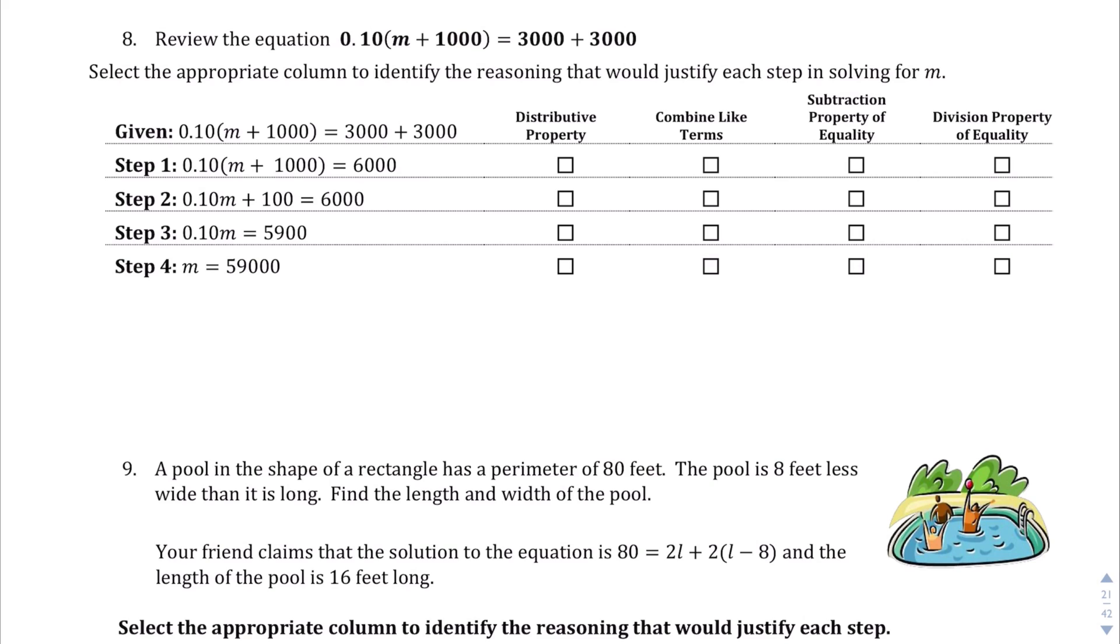Question number 8. Let's review this equation. This random equation: 0.10 times M plus 1,000 equals 3,000 plus 3,000. Select the appropriate column to identify the reason that would justify each step in solving for M. So we have that first one. First thing I do is distribute, but they don't do that. They actually—it looks like they combined in this step one. They combined these two terms, 3,000 and 3,000. So that is combining like terms. The next thing they did looks like they distributed that 0.10 to both the M and the 1,000 and resulted in step two. So I'm going to say distributive property. And then what it looks like they did was they moved this 100 over to the right-hand side by subtracting 100 from both sides. Therefore we're going to say, since they subtracted 100, we're going to say subtraction property of equality. And lastly, divide both sides by 0.10. That is the division property of equality.